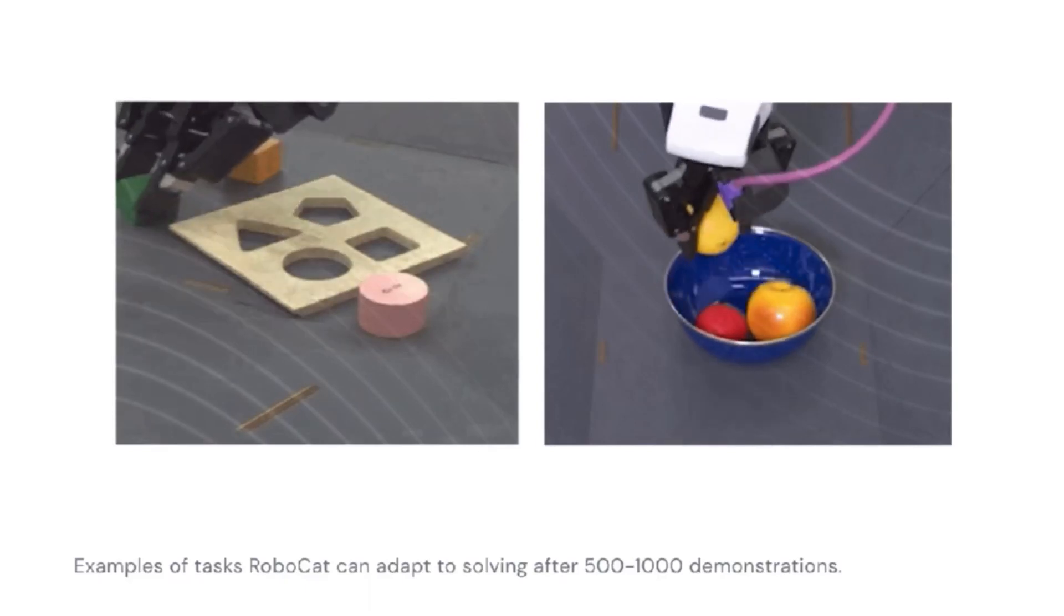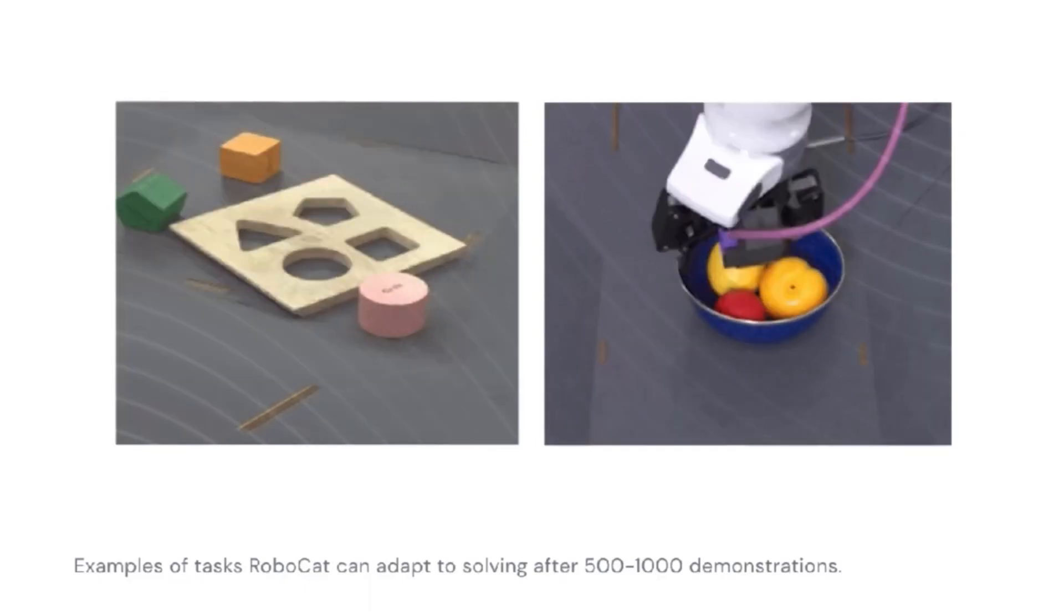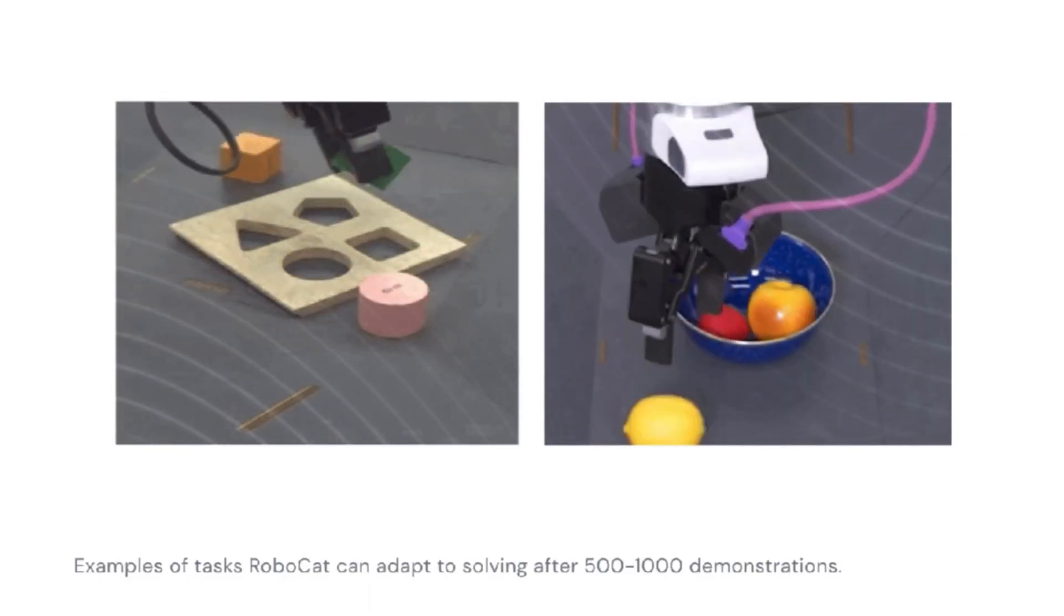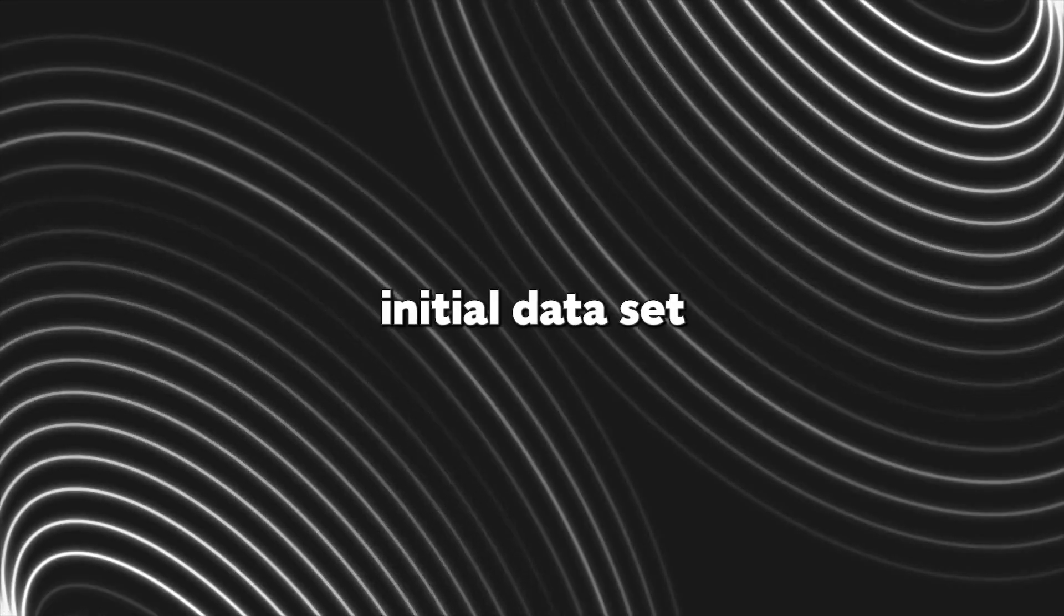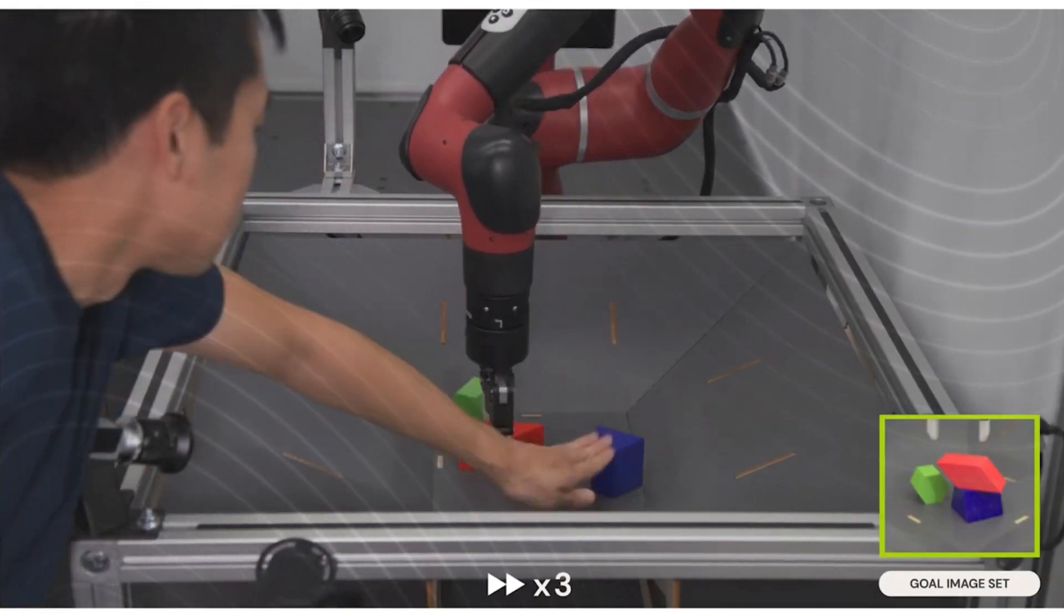This spin-off agent would then practice this task 10,000 times more, which would create even more training data in the process. This training data would then be incorporated into the initial dataset RoboCat was being trained on.